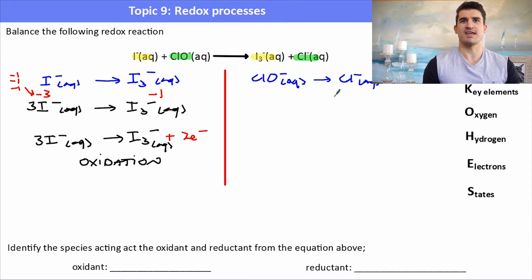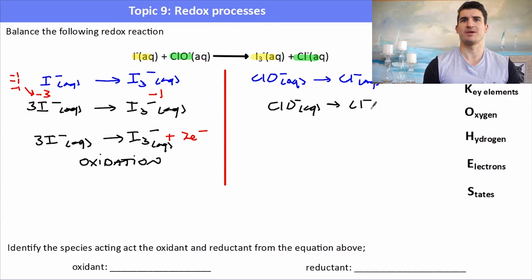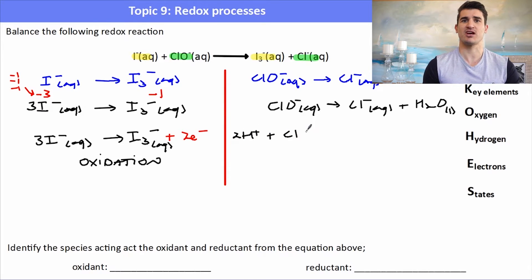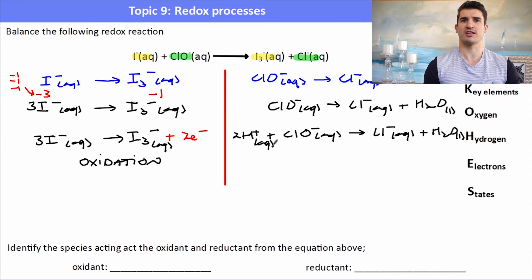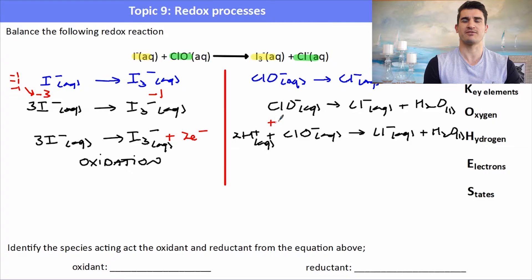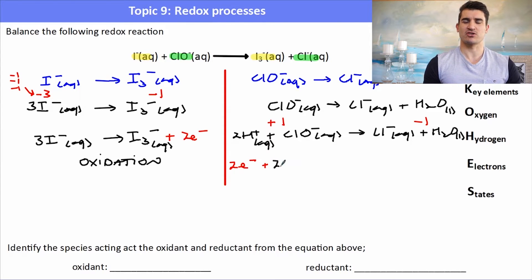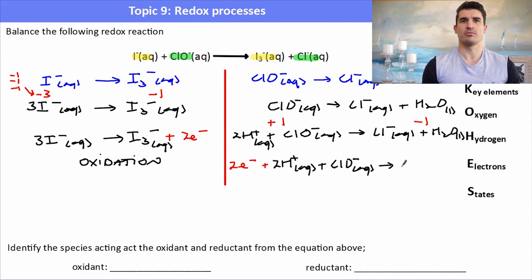For the chlorine half equation, key elements: chlorines are balanced — one on each side. Oxygen is not balanced, so I add 1 water to the right-hand side. Adding that water introduces 2 hydrogens, so I put 2 H+ on the left-hand side. Checking charge: 2 positives from H+ and 1 minus from ClO- gives +1 on the left; on the right, Cl- is -1 and water is neutral, giving -1. I add 2 electrons to the more positive (left) side to balance. This is the reduction reaction.